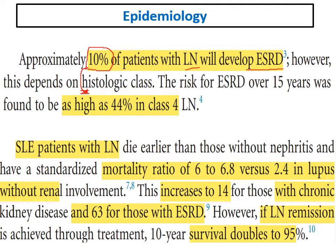Class 3 and class 4 lupus nephritis have the worst outcomes. The percentage of reaching end-stage renal disease can be as high as 45 percent in class 4 — the most severe class.